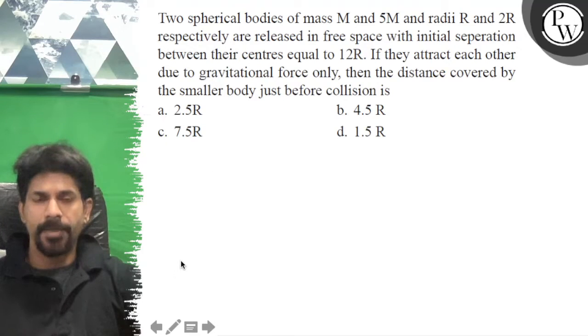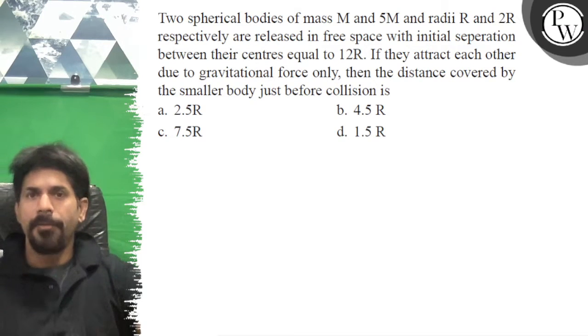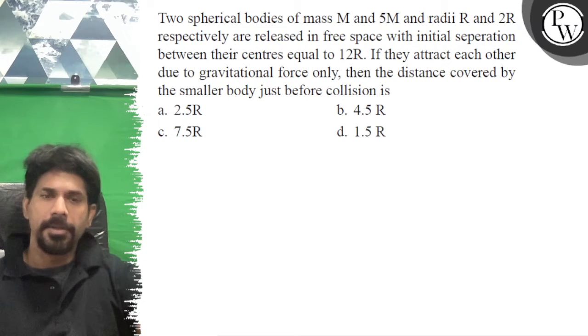Two spherical bodies of mass M and 5M and radii R and 2R respectively are released in free space with initial separation between their centers equal to 12R. If they are attracted to each other due to gravitational force only,